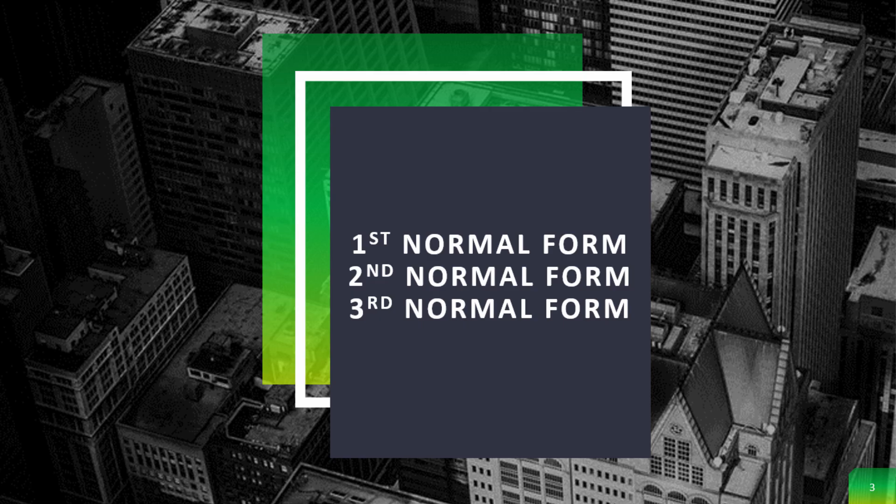Normalization has different stages, or nothing but forms. We call it a form. So we have first normal form, we have second normal form, and then we have third normal form. We also have more normal forms, but from a certification perspective and for your understanding, the three normal forms are more than enough.